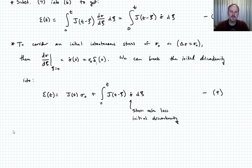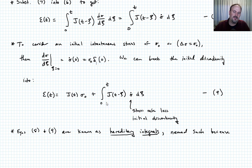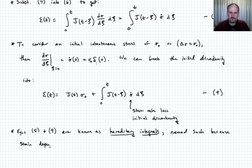The title of the lecture is hereditary integrals. Equations 8 and 9 are known as hereditary integrals. They are named such because the strain at any time t depends on the stress history for all previous times — it depends on the past. That's why they're called hereditary integrals: because the strain depends on all that has happened earlier in the stress history.